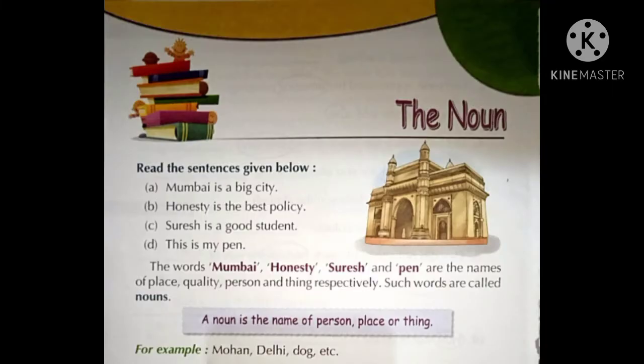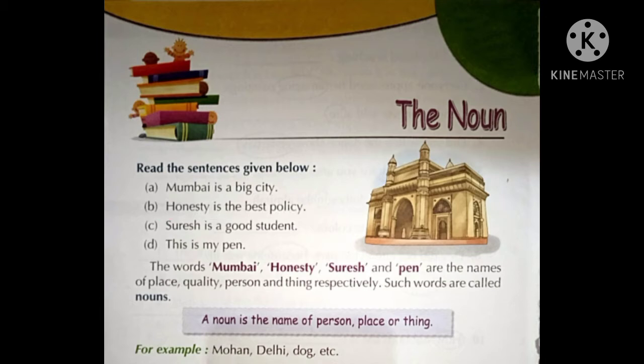Noun. What is noun? Read these sentences given below. We have some sentences that we have to read. Like the first sentence: Mumbai is a big city. Second: Honesty is the best policy. And next: Suresh is a good student. This is my pen. In all these sentences, there are few words like Mumbai,